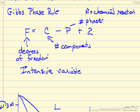For example, temperature, pressure, mole fractions of a phase—these are the type of variables that we're talking about. The number that we can specify before the system is completely defined.